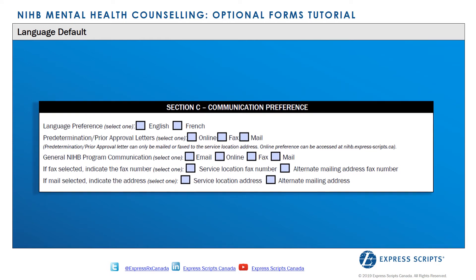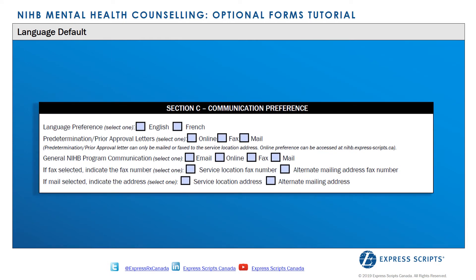Language preference will default to the language of the enrollment package. For example, if the provider submits an English form, all communication items will be provided in English. Providers who wish to update their communication preference once enrolled can do so through the My Profile section in their NIHB web account, or they can use this form for modification purposes.